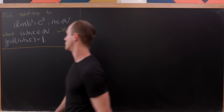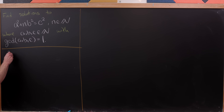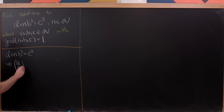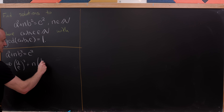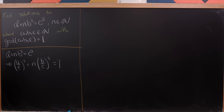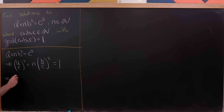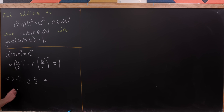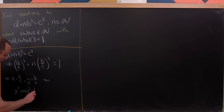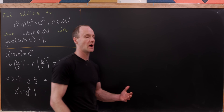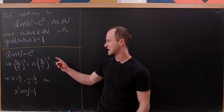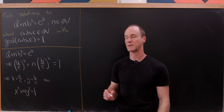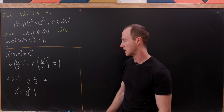If we have a² + n·b² = c², then dividing through by c² gives us (a/c)² + n·(b/c)² = 1. That means we have a rational point — call it x = a/c and y = b/c — on the curve x² + ny² = 1, which is an ellipse. So we've translated this problem of solving the generalized Pythagorean equation into finding rational points on that ellipse.